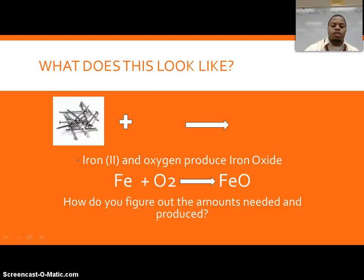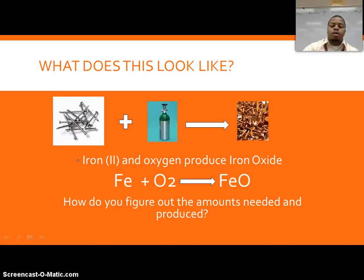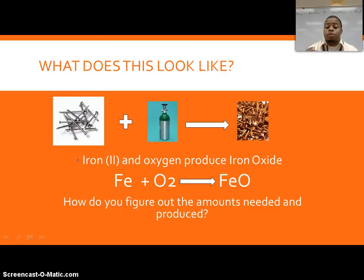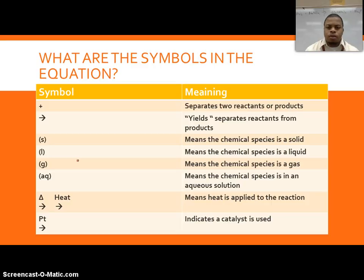For example, if I have iron plus oxygen producing iron oxide — what we commonly call rust — I can see all the different parts of the equation put together and what it's going to make. That sets up the question of how much of each reactant I'm going to need.